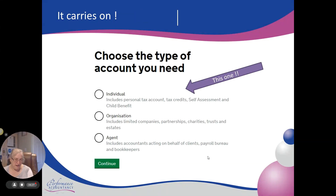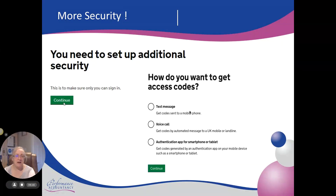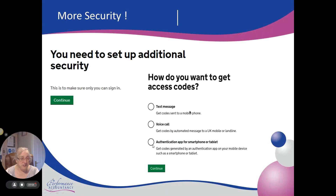Click continue and it asks what type of account you want — are you an individual, a limited company, or a tax agent? If you're a tax agent you should not be watching this, so we go for 'Individual'. Now it says what's your additional security. It will ask how you'd like your security code sent to you because it will always ask for extra coding to log in. I would always get a text message sent to my mobile phone — that's what I go for. There are two other options including an app for a smartphone, but I just go with a text message.